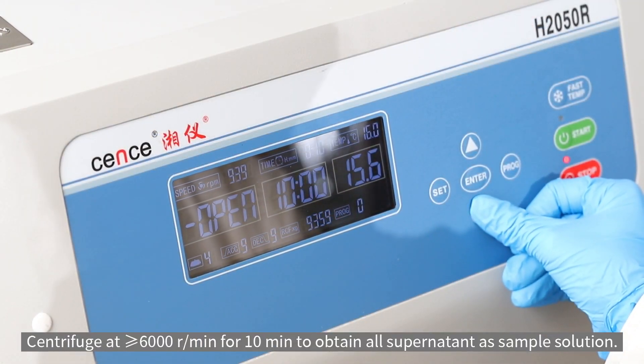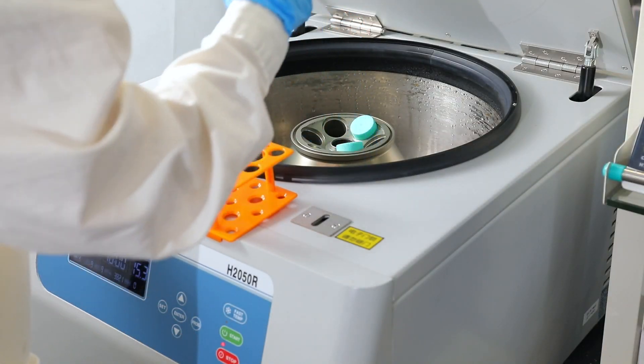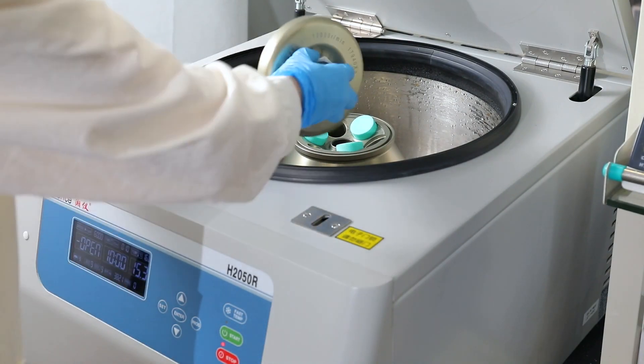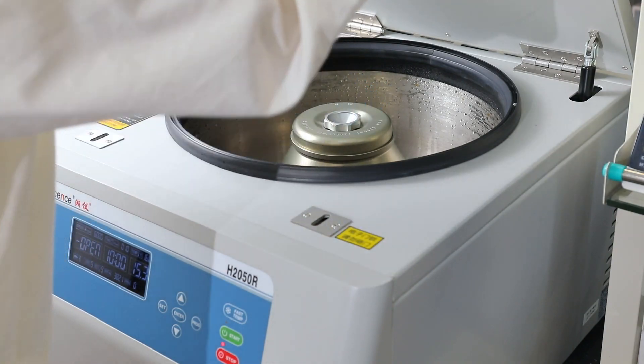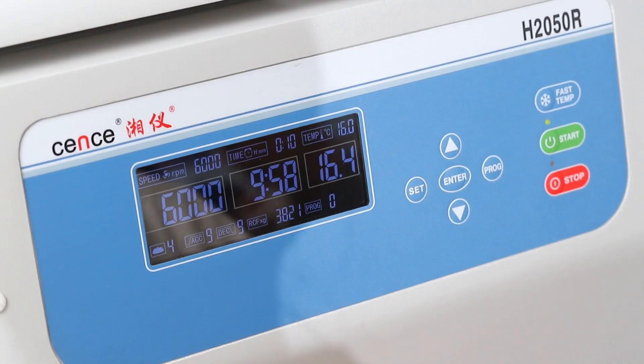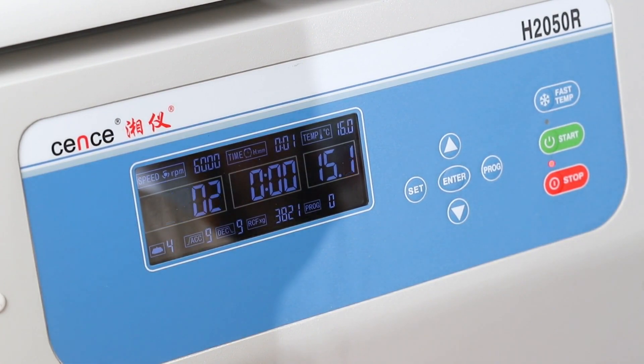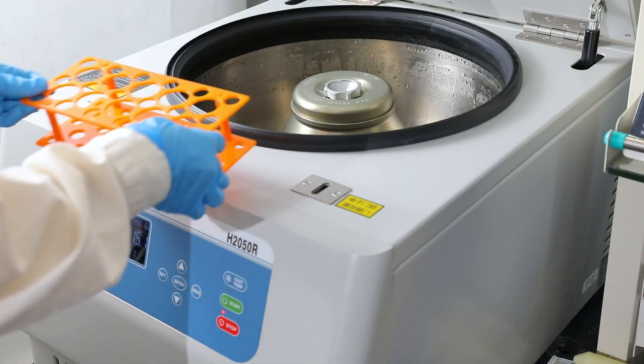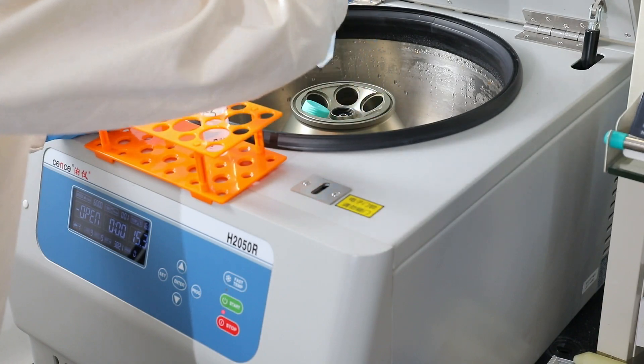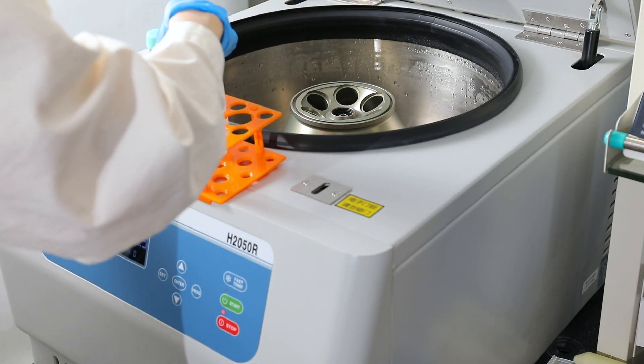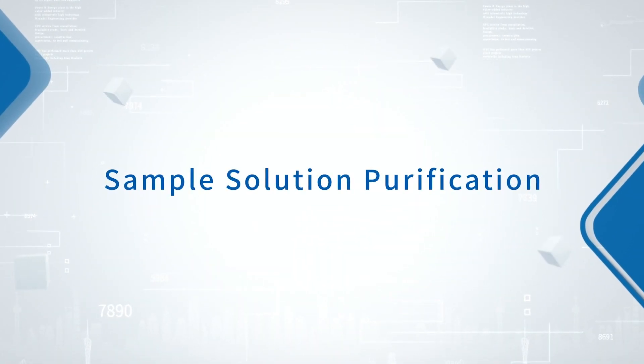Centrifuge at over 6000 rpm for 10 minutes to obtain all supernatant as sample solution. Sample solution purification: